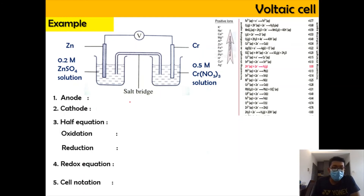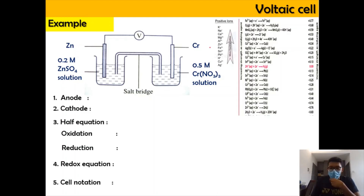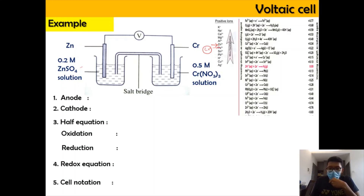Let's do another example with a zinc electrode and a chromium electrode. To determine which is the anode and cathode, we look at the electrochemical series or the standard reduction potential table. From the standard reduction potential table, zinc has a value of −0.76 V and chromium has a value of −0.74 V. The one with the more positive value, which is chromium at −0.74 V, will be at the cathode.